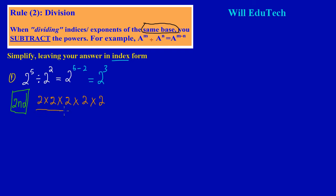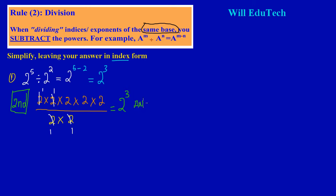We have a division sign, so I draw a line to suggest division. I'm dividing by two multiplying itself two times — two times two. This statement up top is the same as the expanded form in the second method. We simply cancel out: this two cancels that two, this two cancels that two. So we've cancelled both twos at the bottom. What's left is one on the bottom, and three twos on top — so we have base two raised to the third power. This is the same answer as in the first case.